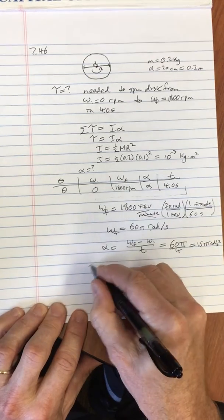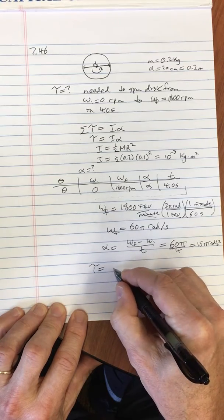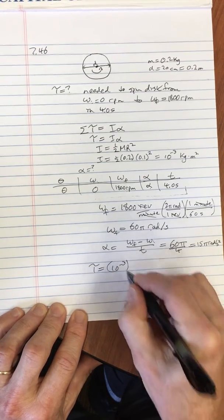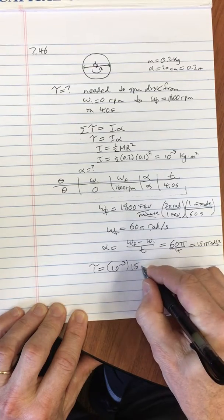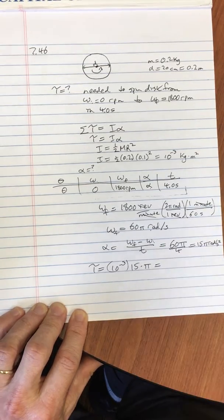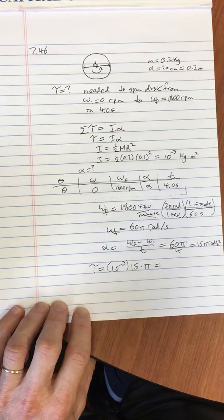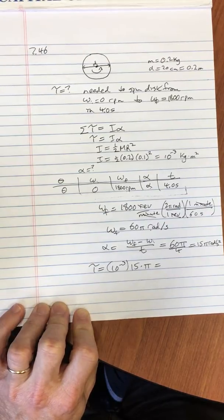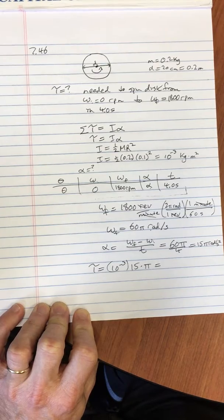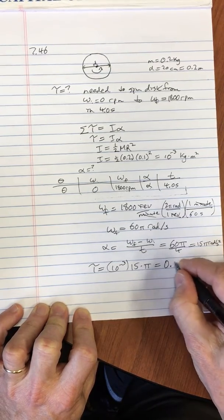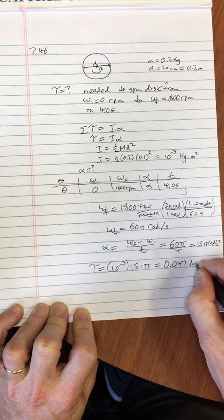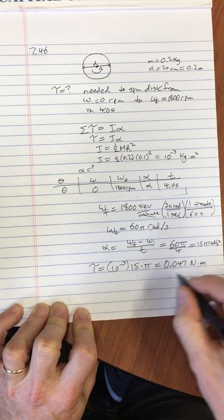So then the torque that's required is 10 to the minus 3, that was my moment of inertia, times 15 times pi, and that gives me 15 times 3.14 times 10 to the minus 3, and I get 0.047 newton meters for the torque.